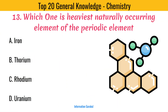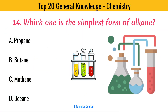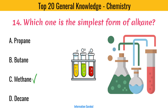Which one is the heaviest naturally occurring element in the periodic table? Uranium. Which one is the simplest form of alkane? Methane.